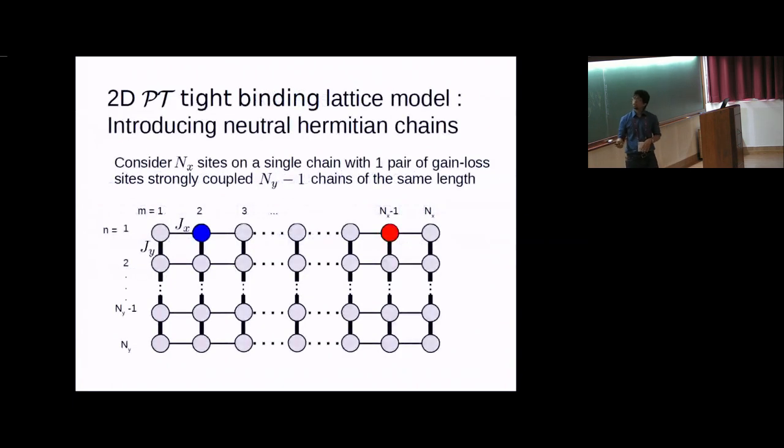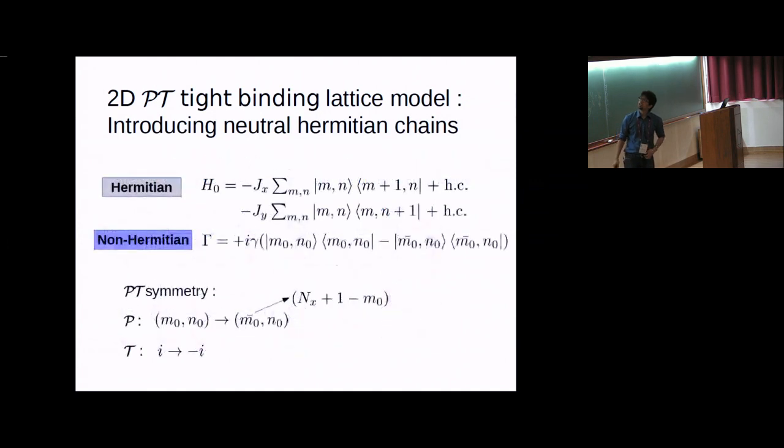We have the same model here, the same one-dimensional chain. But now we have coupled them with Hermitian chains, Hermitian or neutral chains. Why do I say Hermitian? Because they don't have any pair of gain loss impurities. The J-Y coupling is actually stronger than the J-X coupling. That's what we want to emphasize. It's the strong coupling limit. Here's our good old friend, the Hamiltonian. This is the two-dimensional Hamiltonian system. This is the non-Hermitian part where I have written it this way, the gain loss sites.